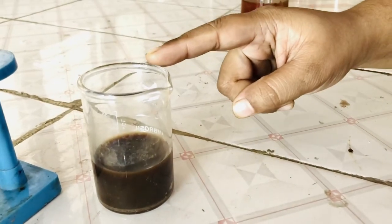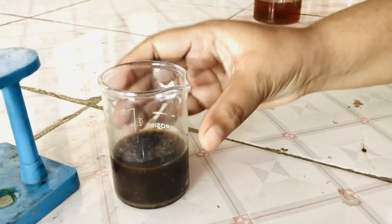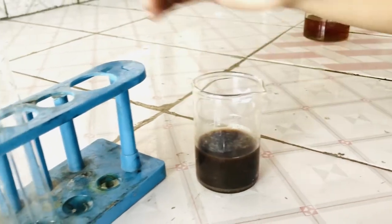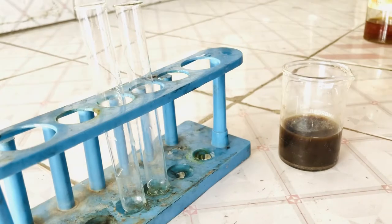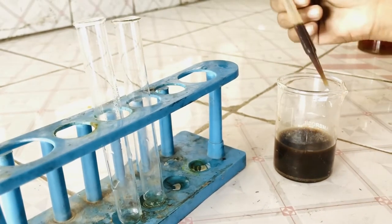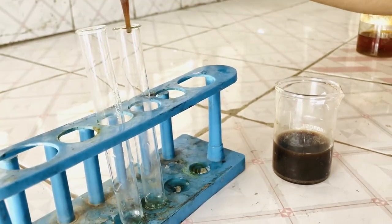Now see the extract has been prepared. So now we will add the aqueous extract of amla in both test tubes in order to prepare the test and standard solutions. We will add in equal amounts.